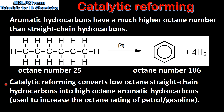To summarize, catalytic reforming converts low octane straight chain hydrocarbons into high octane aromatic hydrocarbons, and this is used to increase the octane rating of petrol or gasoline.